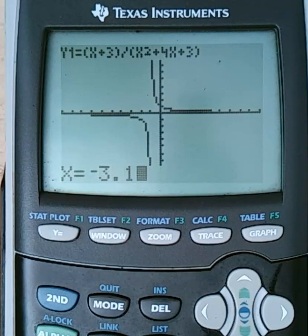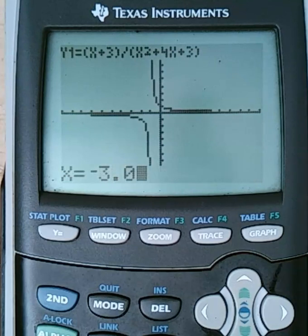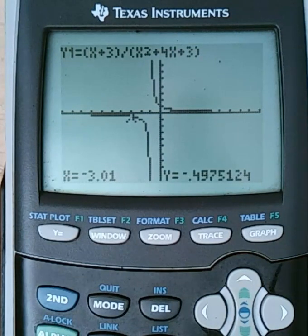So I'm going to go negative 3.1, enter, and I'm going to get negative 0.4761905. And I'm going to write that in my table. And I'm going to negative 3.01, and I'm going to get negative 0.4975124. Write that down in my table.